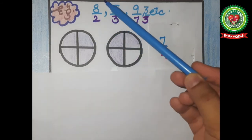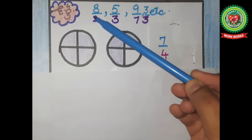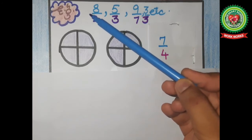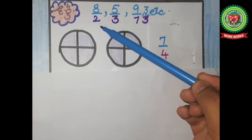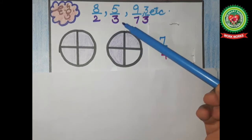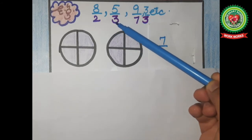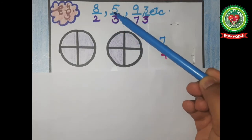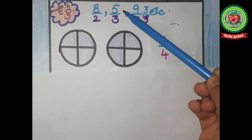In 8 upon 2, it means 8 parts out of groups of 2. In 5 upon 3, it tells us 5 parts out of groups of 3.